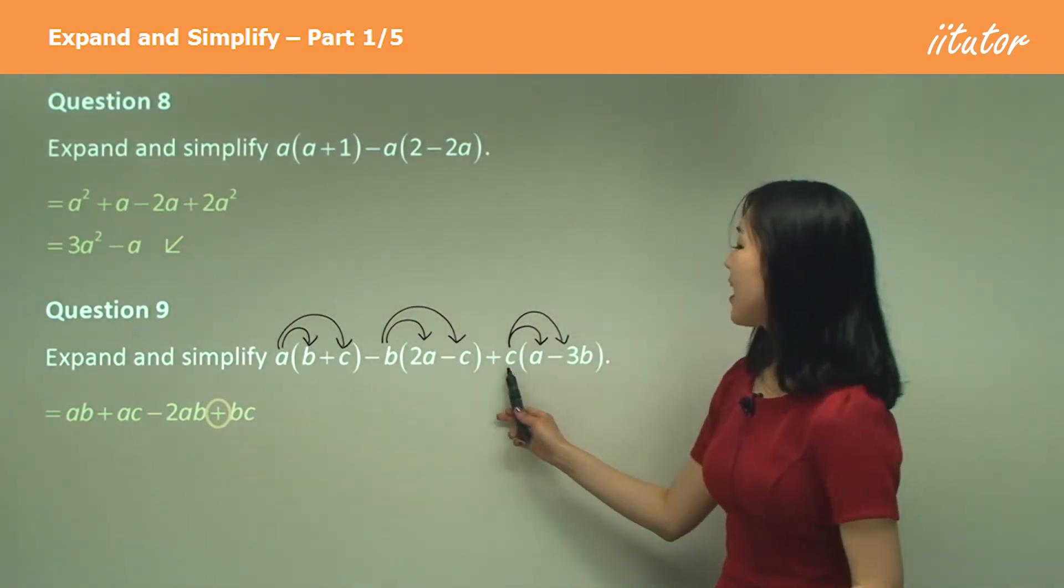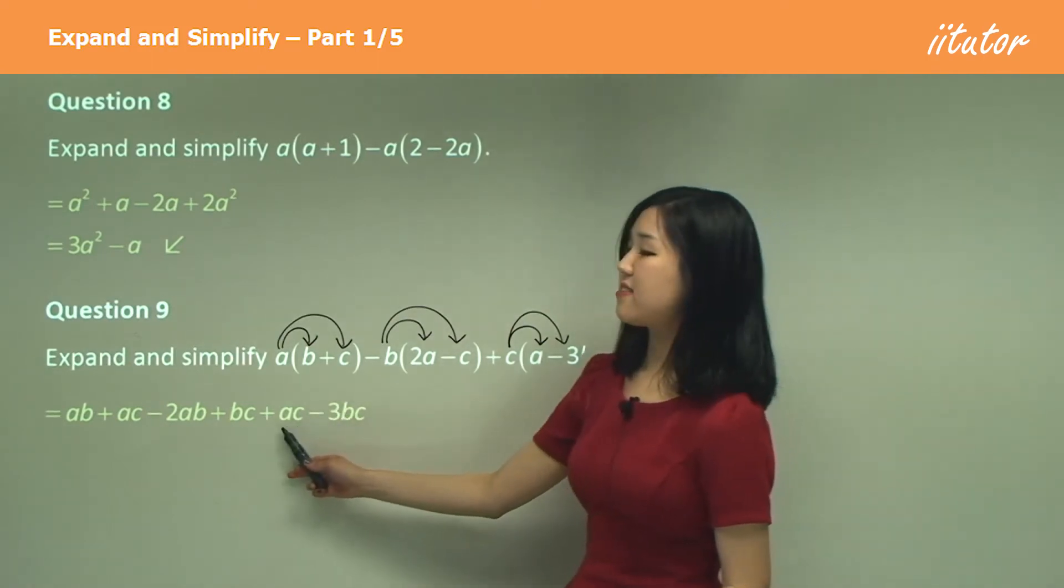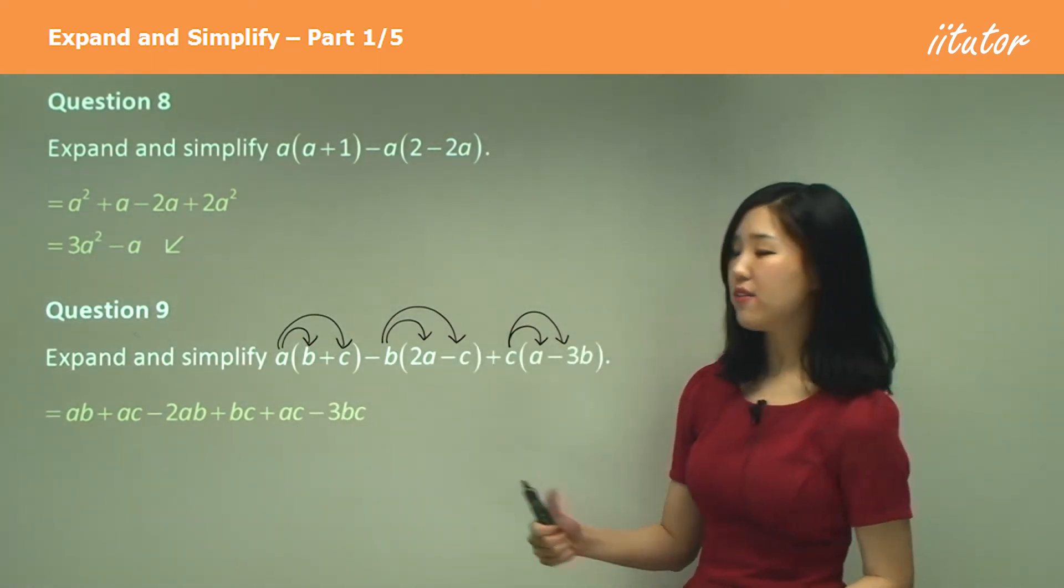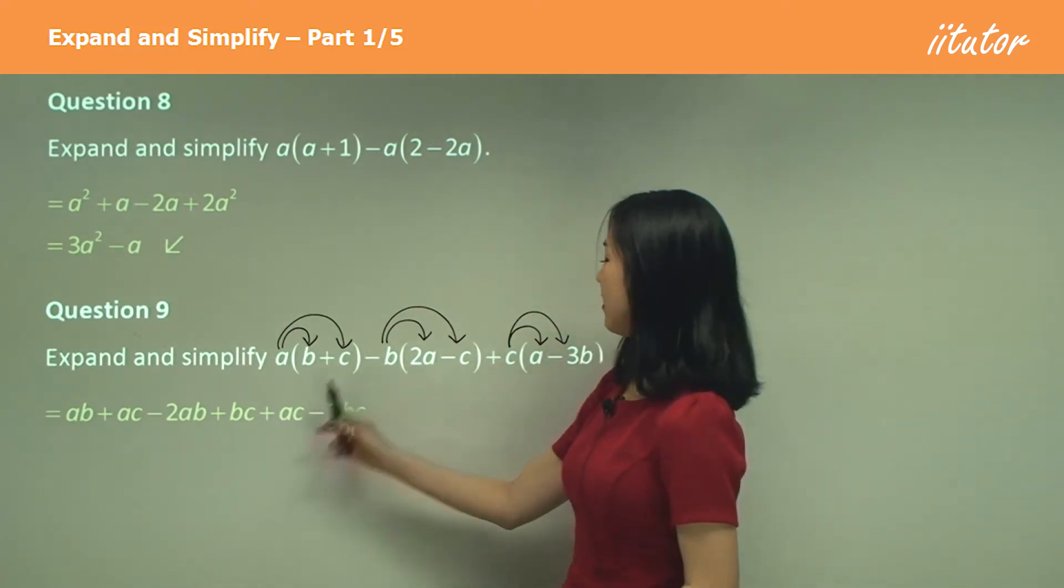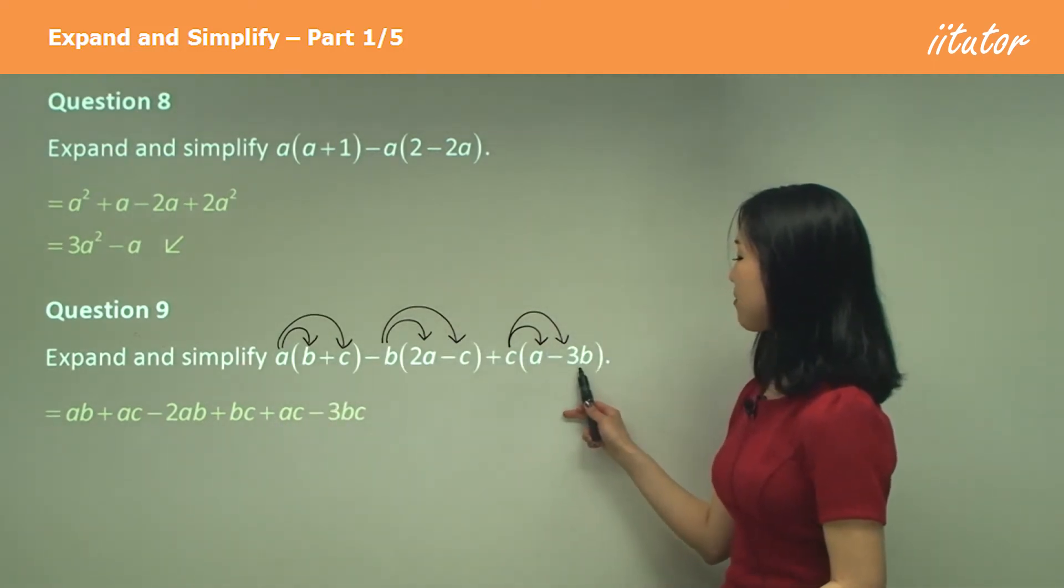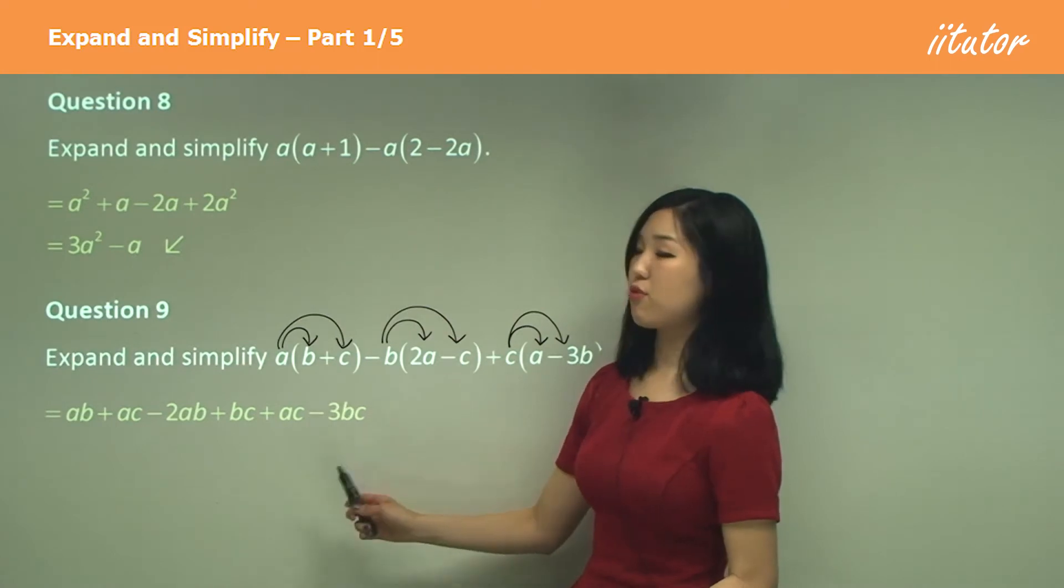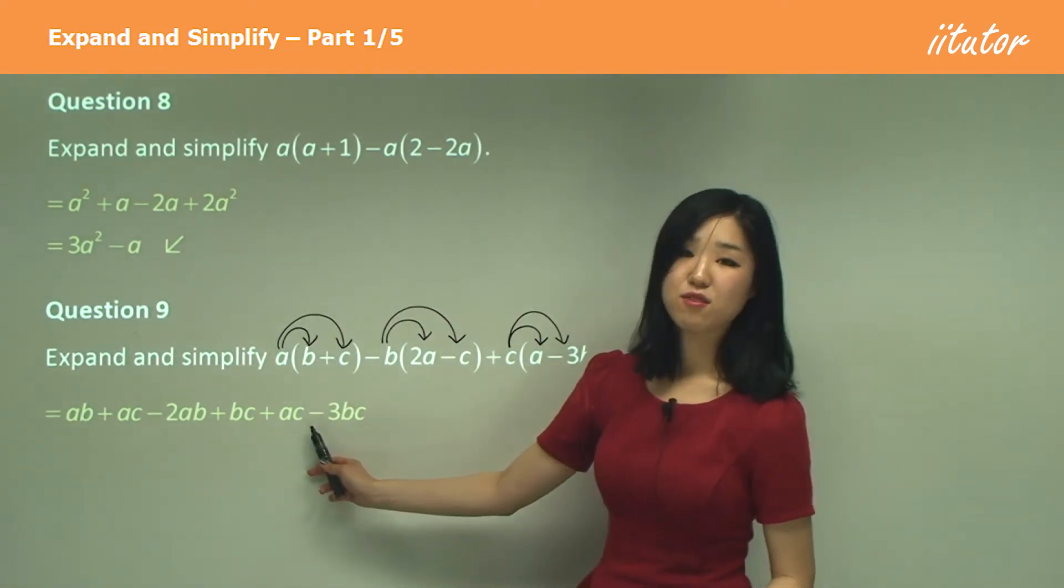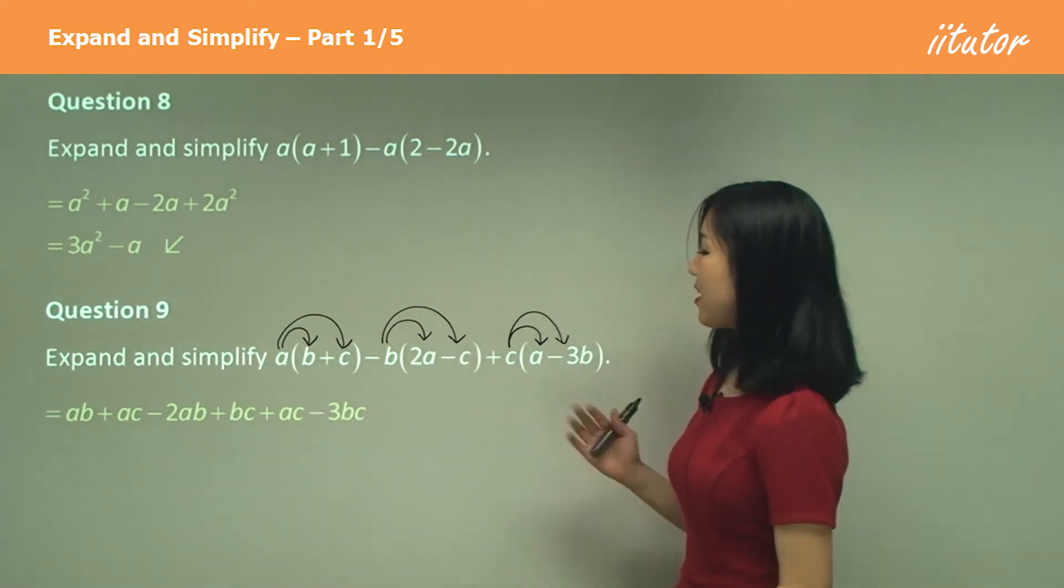Okay and then again c times a is ca or ac. We usually like to keep it in alphabetical order. So put a first, ac, and then c times negative 3b is negative 3bc. This time it's positive and negative so we keep a negative not a positive.